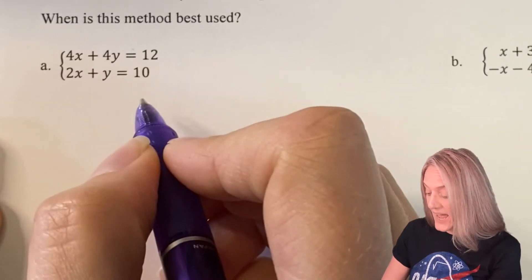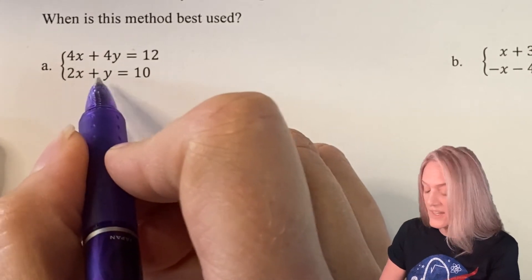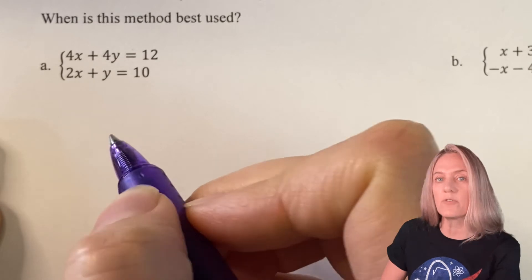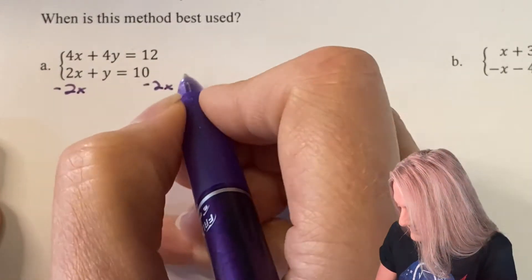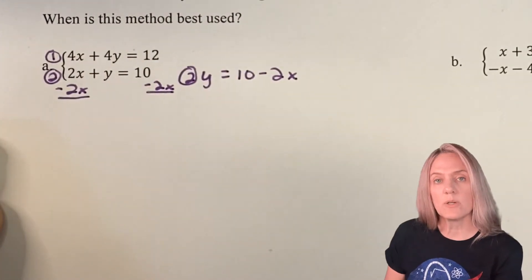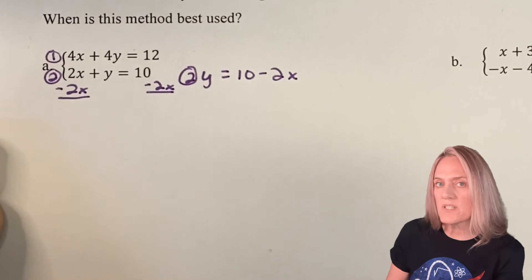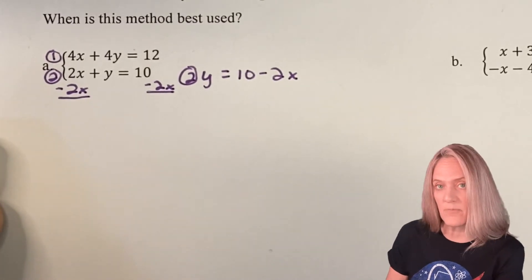On example A, the second equation, y has a coefficient of 1. It would be really easy for me to take that second equation and solve for y. I labeled my two equations 1 and 2, just to help us keep track of them.